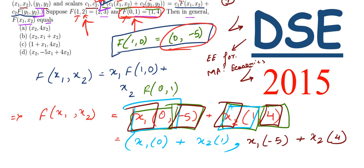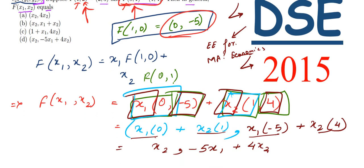Solving this: x₁·0 gives 0, x₂·1 gives x₂. Then x₁·(-5) gives -5x₁, and x₂·4 gives 4x₂. So our answer is F(x₁, x₂) = (x₂, -5x₁ + 4x₂).